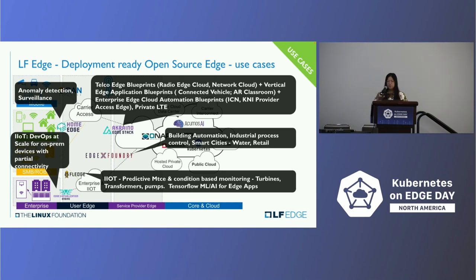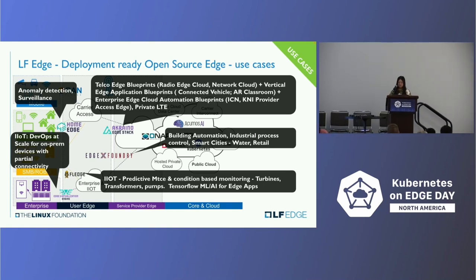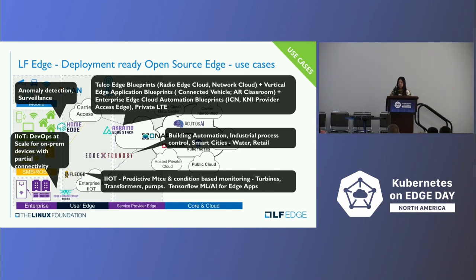All of this supports typical use cases. For example, home edge enables anomaly detection and surveillance. In industrial environments, FLEDGE supports prediction for turbines, transformers, and pumps. IIoT supports partial connectivity. Acrino blueprints support many use cases including Telco edge for radio edge cloud integrated from ORAN.